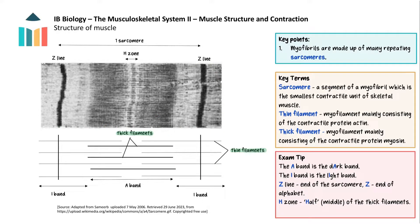The light band is called the I-band, containing just thin filaments. The A-band is the area containing the thick filaments. The H-zone is the area containing only thick filaments with no actin. To remember which is which: the A-band is the dark band, and 'dark' has an A in it. The I-band is the light band, and 'light' has an I in it. The Z-line is the end of the sarcomere, just as Z is at the end of the alphabet. The H-zone is in the middle — halfway through the thick filament — and 'half' begins with H.